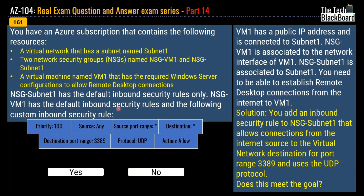NSG subnet 1 has the default inbound security rules only. NSG VM1 has the default inbound security rules and a custom inbound security rule with priority 100, source any, source port range any, destination any, destination port range 3389, protocol UDP, action allow. The VM has a public IP address and is connected to subnet 1. NSG VM1 is associated to the network interface of VM1, and NSG subnet 1 is associated to subnet 1. You need to establish remote desktop connections from the internet to VM1.